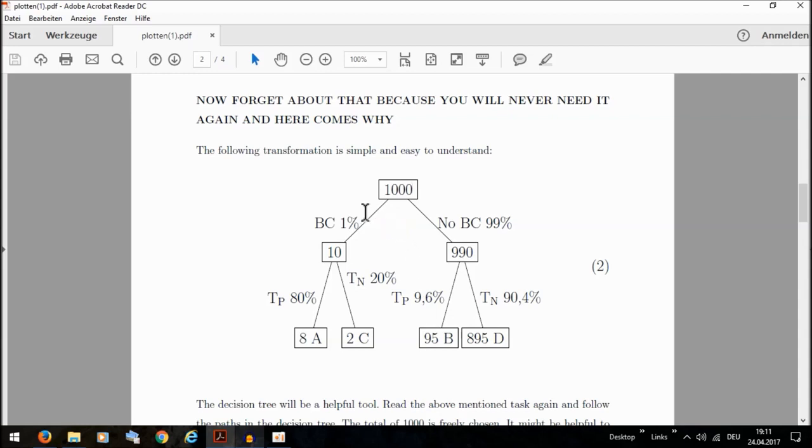So we look first on the left part. The prevalence—BC stands for breast cancer—the prevalence is 1%. So out of 1000 people, 10 people have breast cancer. And out of these 10 people, 8 people have a positive test result.